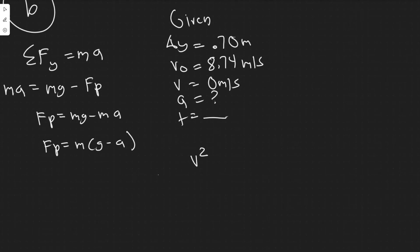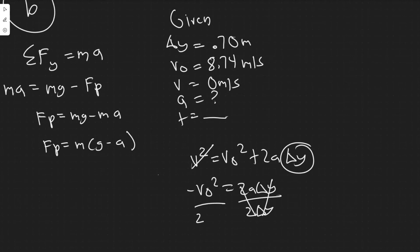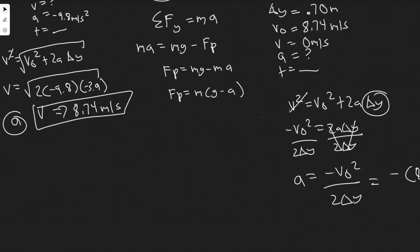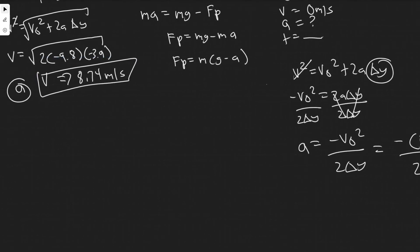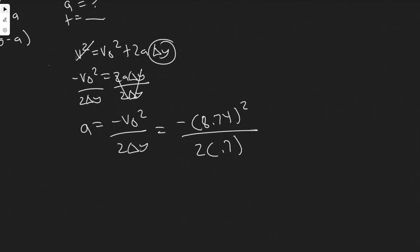Using the same kinematic formula: v squared equals v₀ squared plus 2a times delta y. Since v equals 0, we get 0 equals v₀ squared plus 2a·delta y, so a equals minus v₀ squared over 2 times delta y. The initial velocity is 8.74 m/s and delta y is 0.7 m. Plugging in: 8.74 squared divided by 1.4 — using the more exact value from the calculator — gives a equals minus 54.6 meters per second squared. The negative indicates the acceleration is upward.